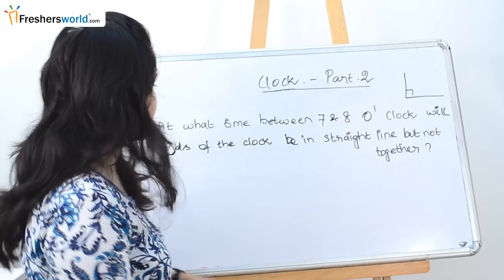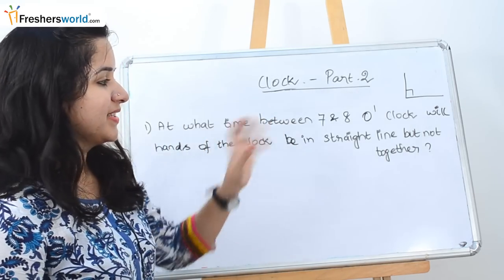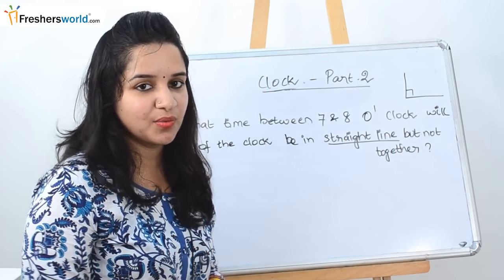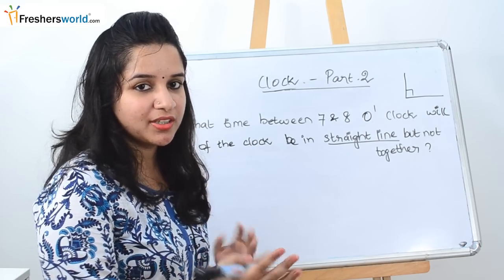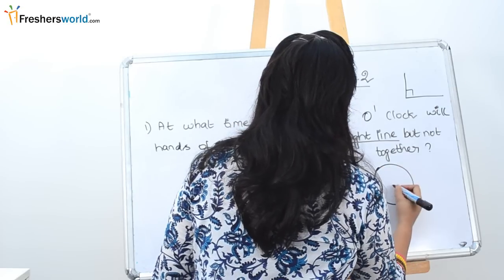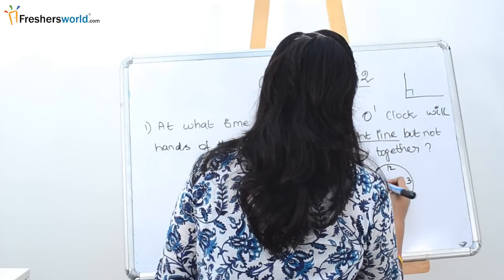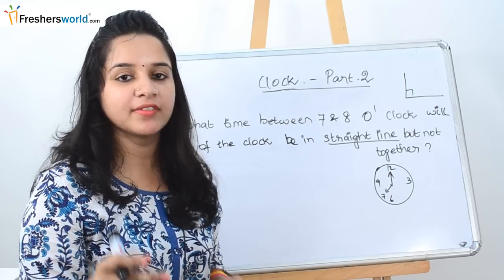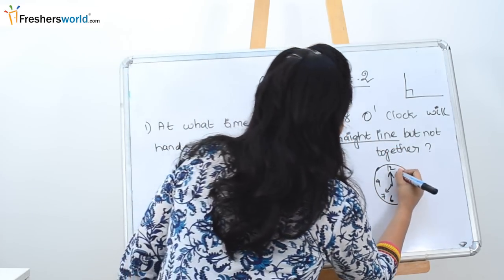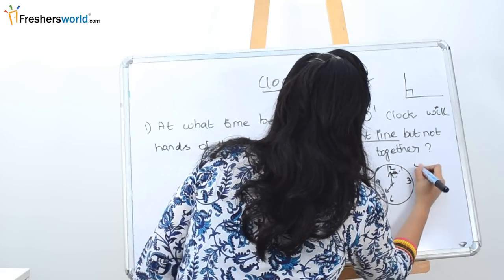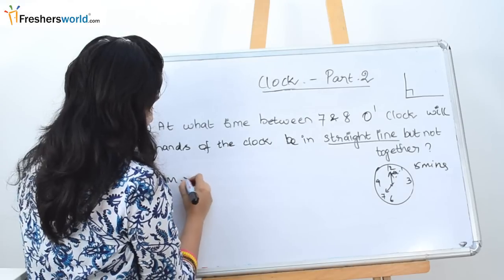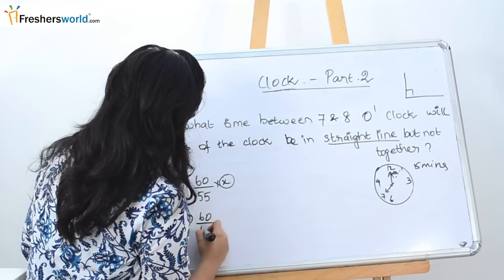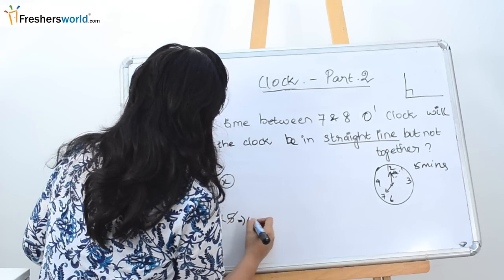The next question is: at what time between 7 and 8 o'clock will the hands of the clock be in a straight line but not together? A straight line means 180 degrees — they may also ask when the hands are opposite each other. Starting at 7 o'clock, for the hands to be in a straight line, the minute hand needs to be near the 1 position, requiring a gain of 5 minutes. So minutes = (60/55) times 5 = 60/11 minutes past 7 o'clock.